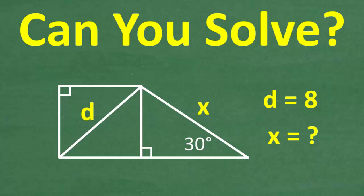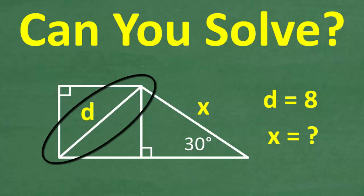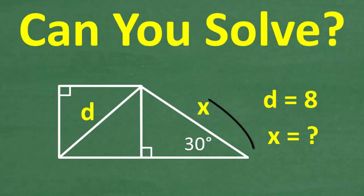So here is a diagram, obviously. Now, I don't want to explain it too much because you need to interpret the information in the diagram to be successful in mathematics. But we are told that d is equal to 8. You can see this is d right here. And we're looking for the length of x, and that would be this right there.